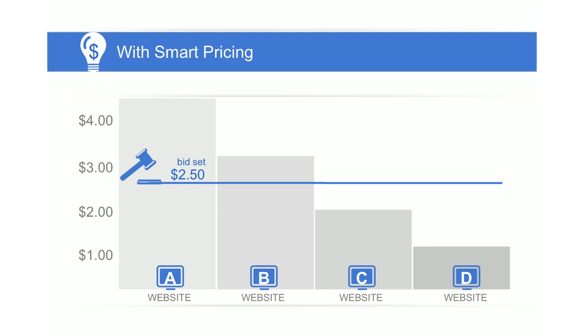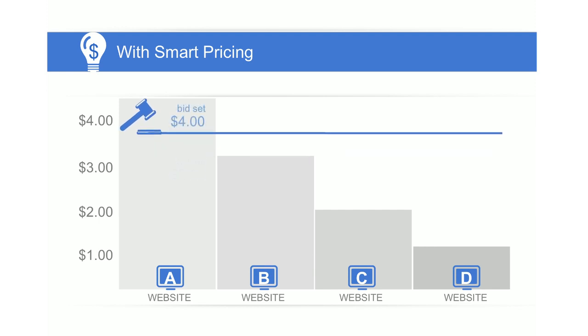What smart pricing does is allow our system to auto-adjust the advertiser's bid across the sites according to the likelihood the click will deliver actionable business results. An advertiser can then confidently bid the maximum they're willing to pay across all sites and leave it to our system to take care of the rest. So in this example, the advertiser can bid $4 across all four sites, and our system will automatically adjust the bids for each of the other sites to $3, $2, and $1 respectively.